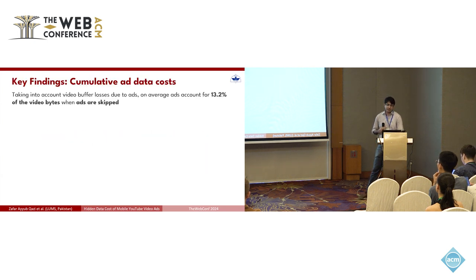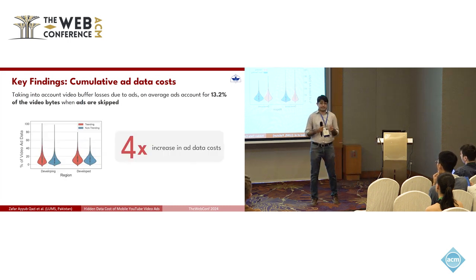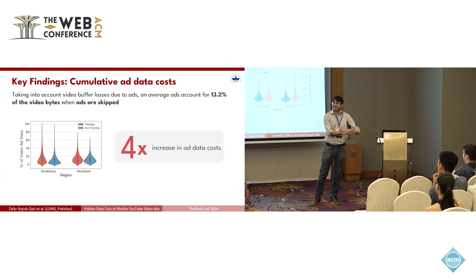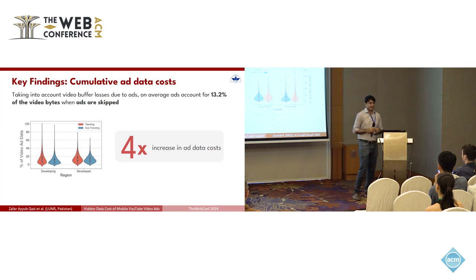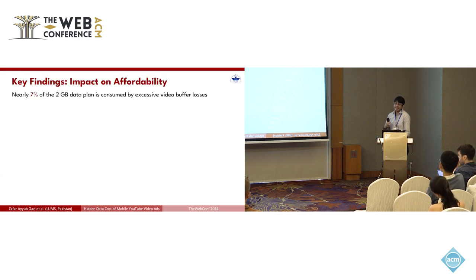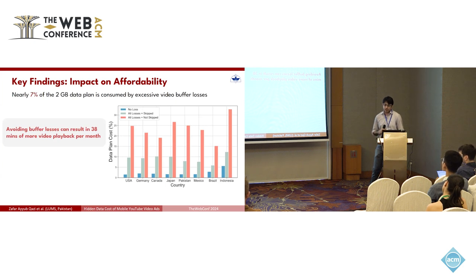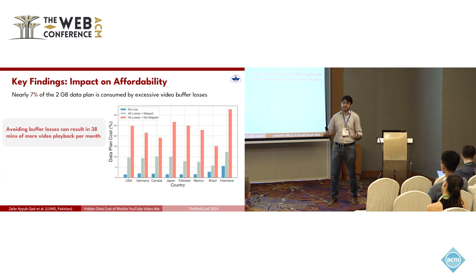Taking all of these into account, the cumulative ad data account was 13.2%, which amounts to a 4x increase in the amount of data downloaded because of ads. If you discount these excessive losses, it would decrease the ad data cost by 4x. In terms of affordability impact, we observed that nearly 7% of a 2GB data plan is consumed by just these excessive video buffer losses. Avoiding these losses would result in 38 minutes of additional video streaming time per month.